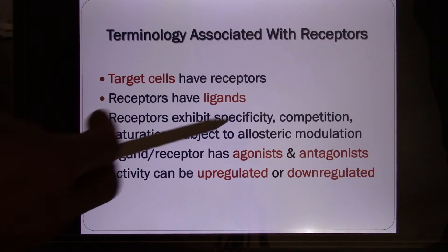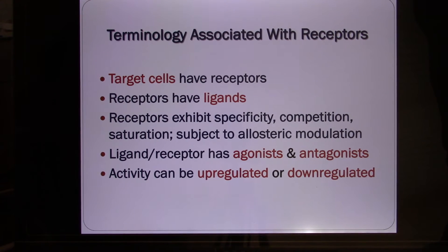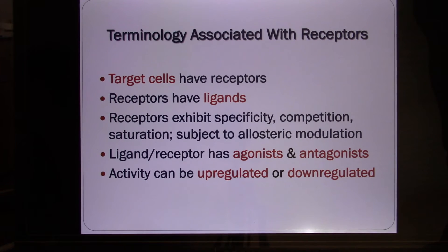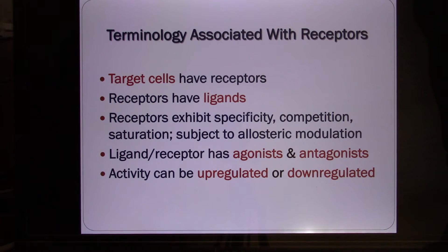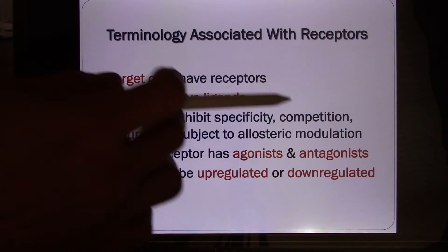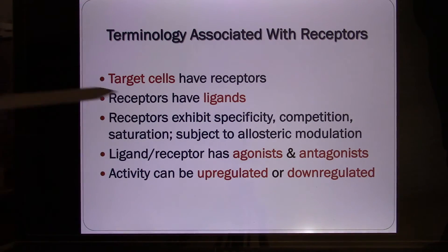These receptors have specificity — each receptor is only responsible for one kind of ligand. For example, insulin is going to bind with the insulin receptor; it won't bind with other kinds of receptors. They also have competition — when you have too many signals, the receptor has a limited binding site, like limited seats. So they can be saturated, and they can have competition and saturation.